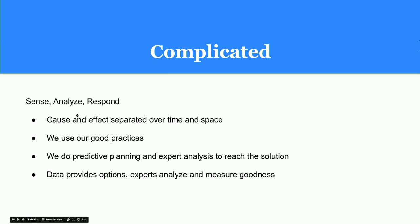Next comes complicated, where we have to sense, analyze, and respond. The problem is understandable but the solution requires thought and analysis. Cause and effect are separated over time — sometimes a solution works but later when we try to repeat it, it doesn't work. We have to think about the present situation and how we can do better. Here we can use Kanban, which is a good framework for this purpose — keeping tasks in backlog items, pulling from there, and working upon them.